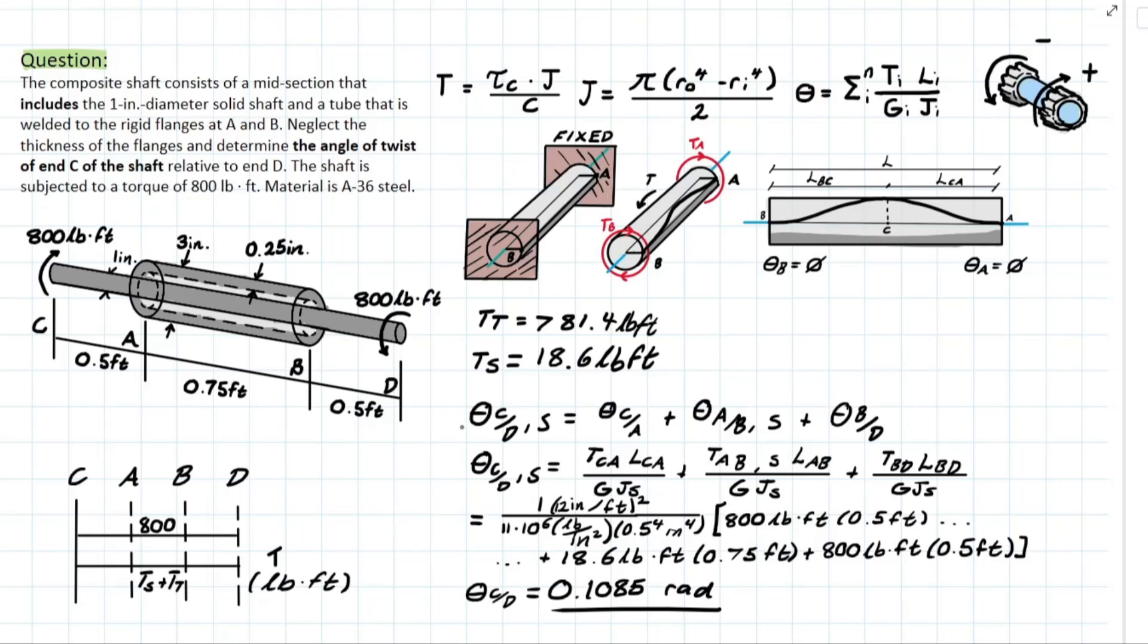And then CA and BD are pretty simple, as we've done before, just taking that torque applied to the entire system, which is that 800, because it is completely taken by solely the shaft at these two sections. Plugging all that in, you're left with this final answer, with the angle of twist at NC with respect to D for the shaft of 0.1085 radians.